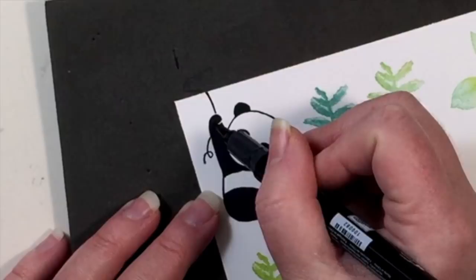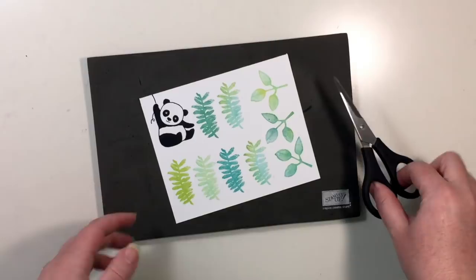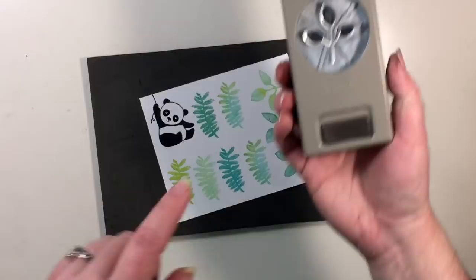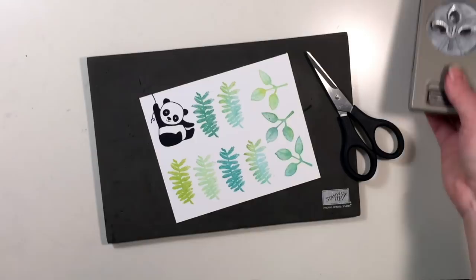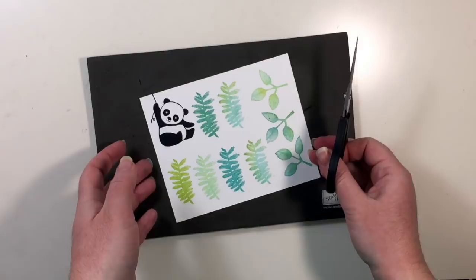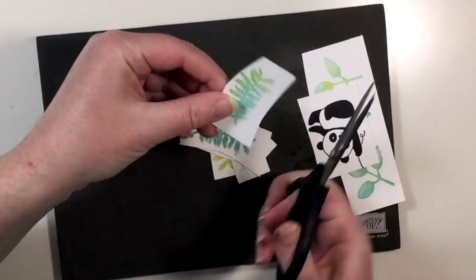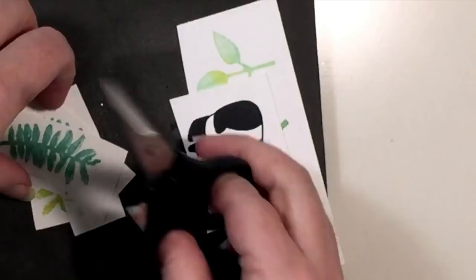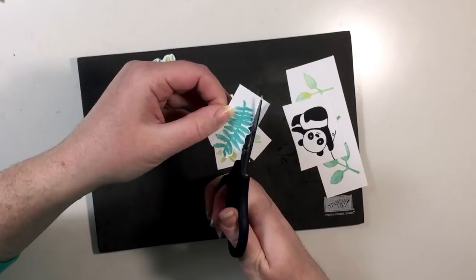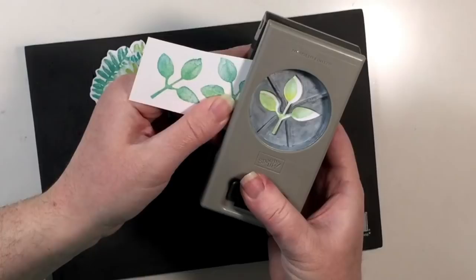All right, so I have my snips. I've got all of my images. We're going to fussy cut these out and then we're going to use the coordinating leaf punch that coordinates with that Painted Harvest set to punch out our leaves. So, put on some tunes, make sure you're comfy, and get to snipping.